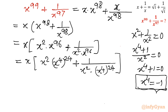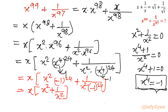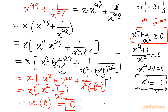Since x to the power 4 equals negative 1, I will substitute that value. So it becomes x times, in brackets, x squared times negative 1 to the power 24 plus 1 over x squared times negative 1 to the power 24. Now negative 1 raised to the power of an even number 24 equals 1. So I will write x times x squared plus 1 over x squared. Our earlier equation gives x squared plus 1 over x squared equals 0. So from here, I write x times 0, and our expression value comes out to 0. So the final answer: x power 99 plus 1 over x power 97 equals 0.